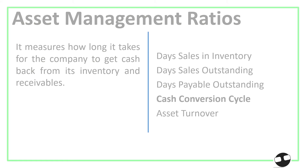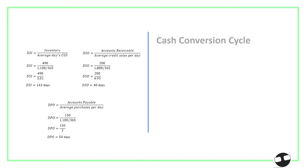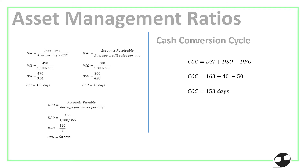The Cash Conversion Cycle (CCC) measures how long it takes for the company to get cash from its inventory and receivables. The formula is DSI plus DSO minus DPO, giving us 153 days. Since this measures how fast the company gets back its cash, we want this figure to be as low as possible.